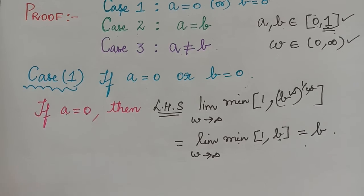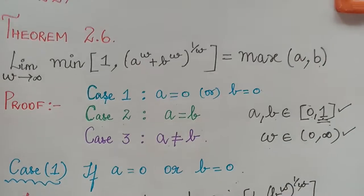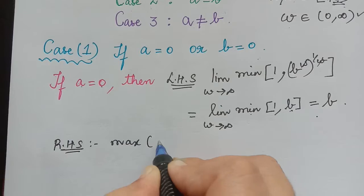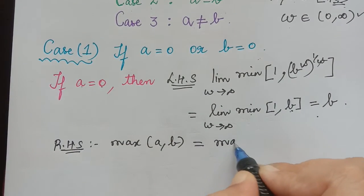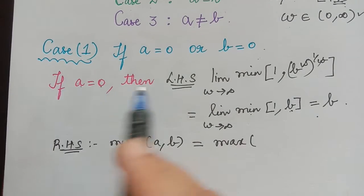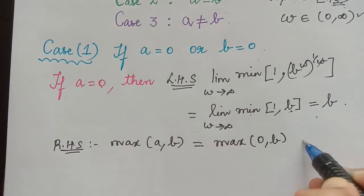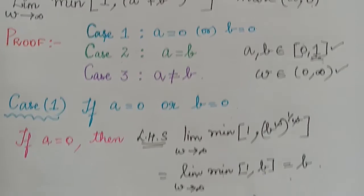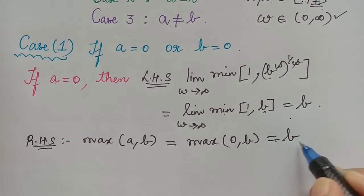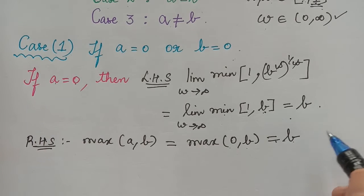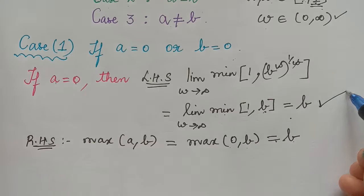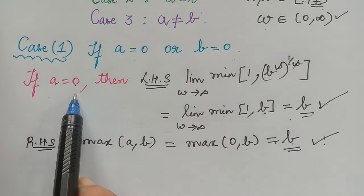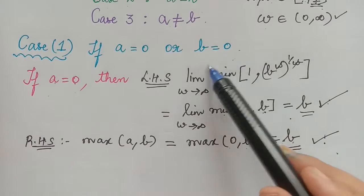Now we consider the right hand side, which is maximum of a, b. Since a equals 0, this becomes maximum of 0 and b. We know that 0 is the least value in the closed interval, so maximum of these two values equals b. We observe that both the left hand side and right hand side equal b, and therefore the theorem holds when a is equal to 0. In a similar way, the theorem will also hold when b is equal to 0.